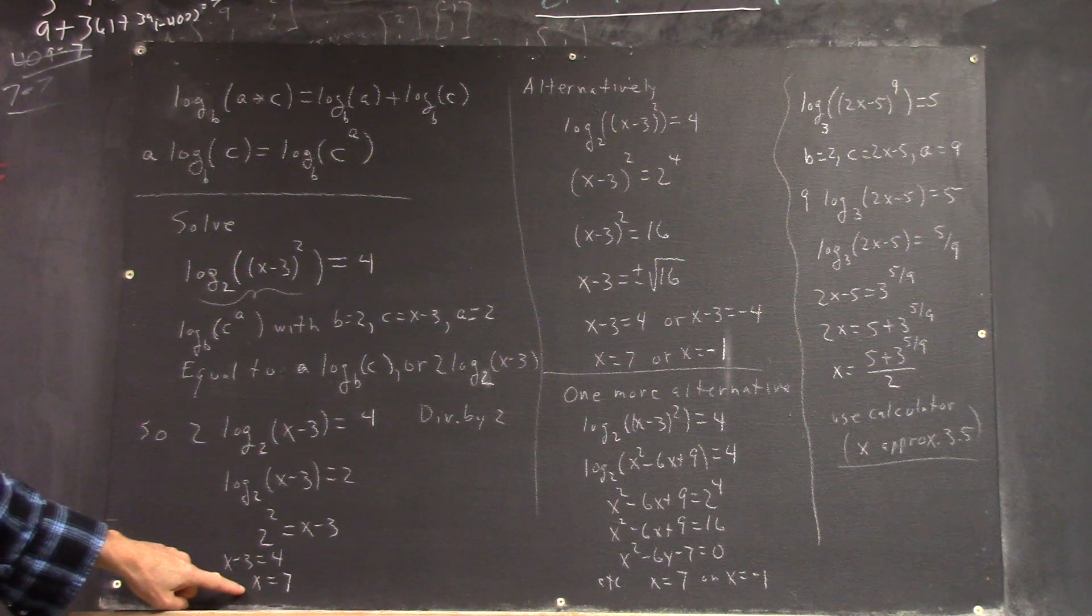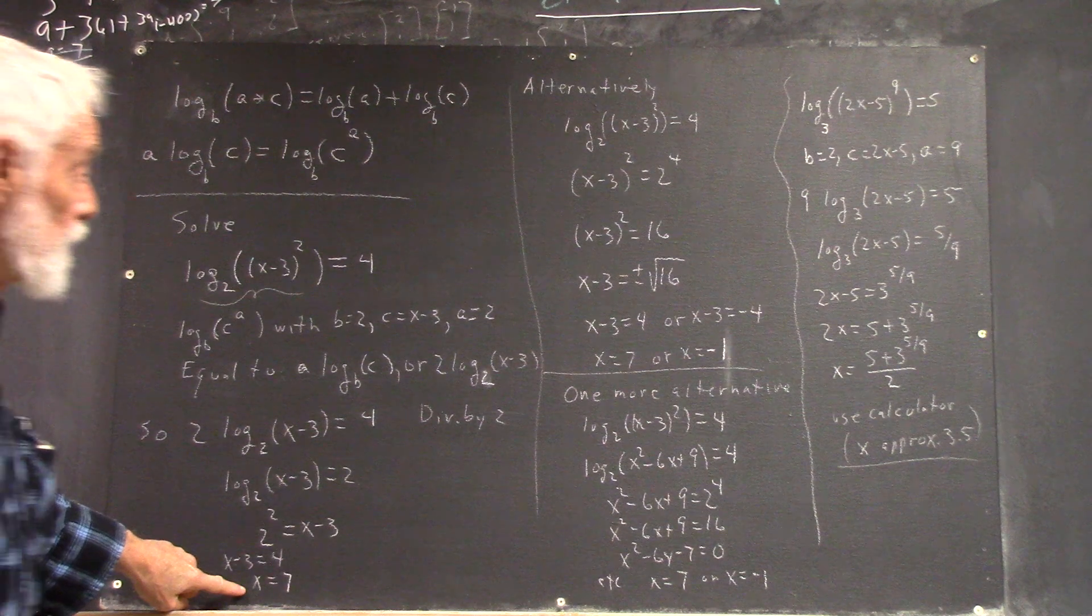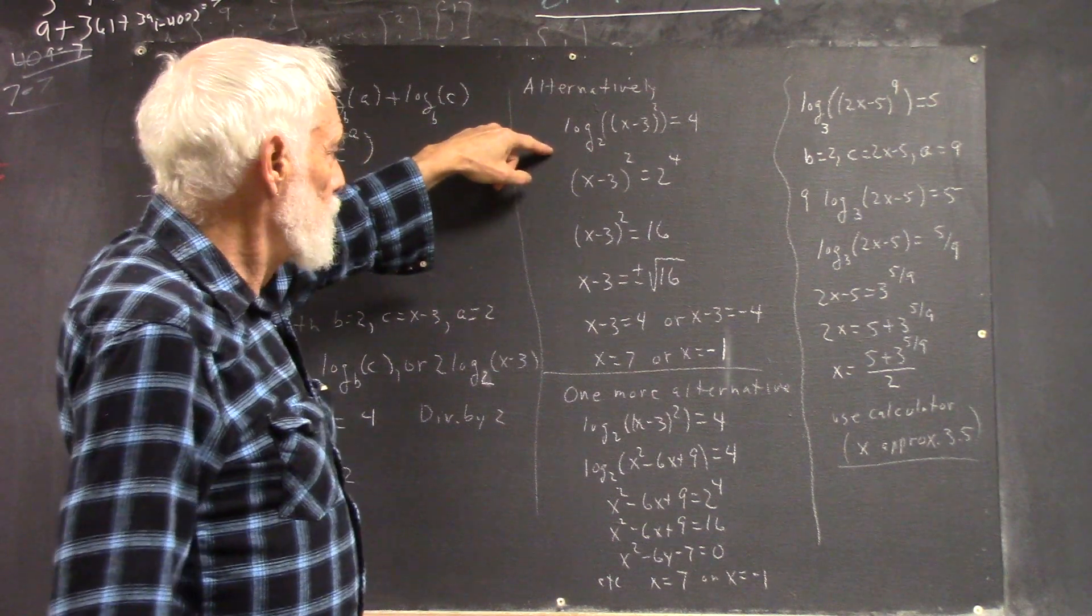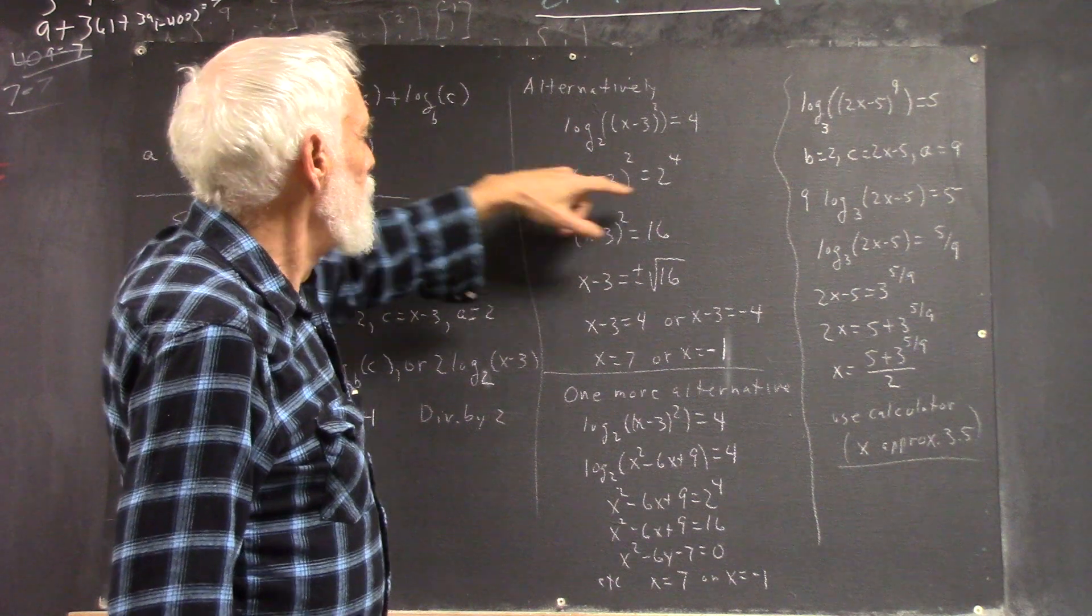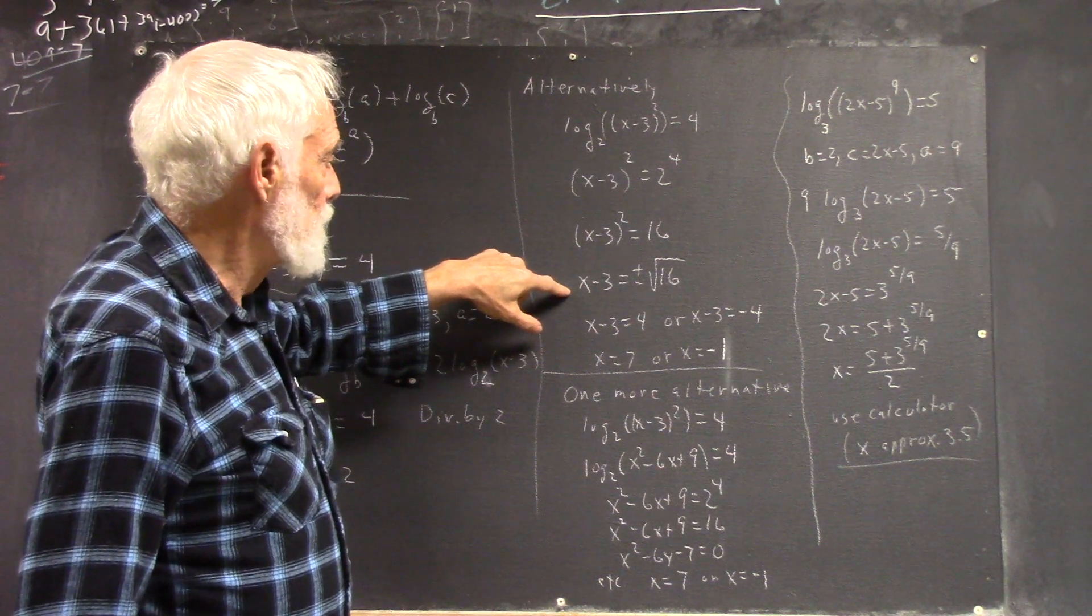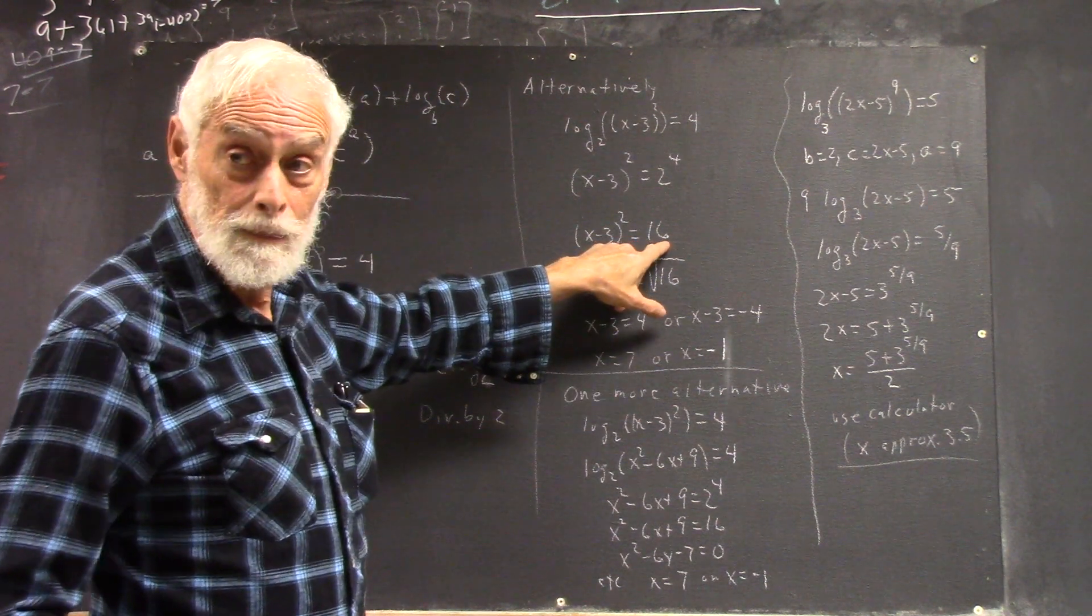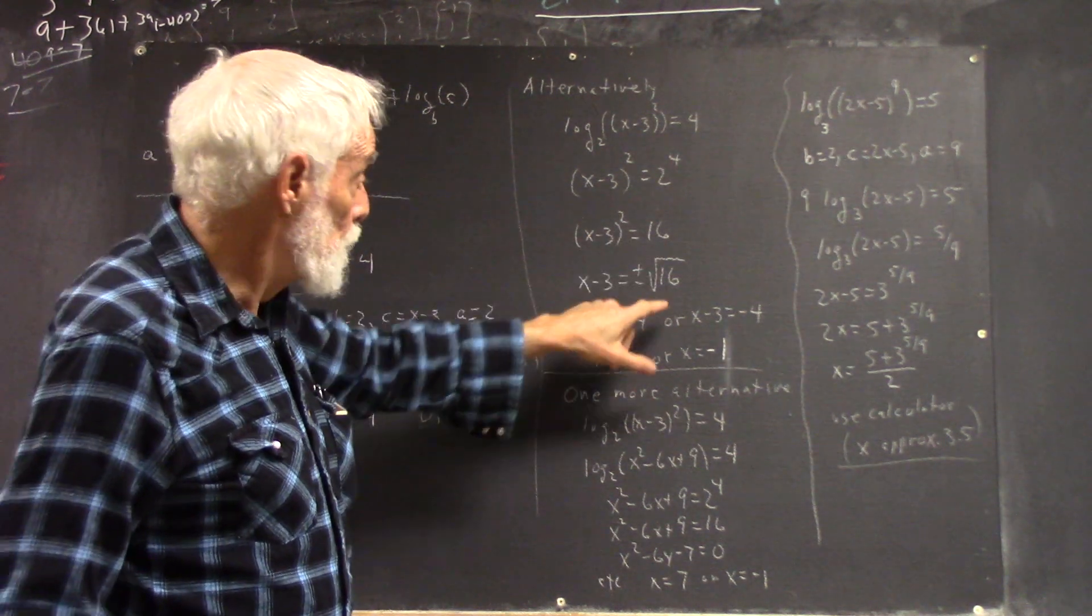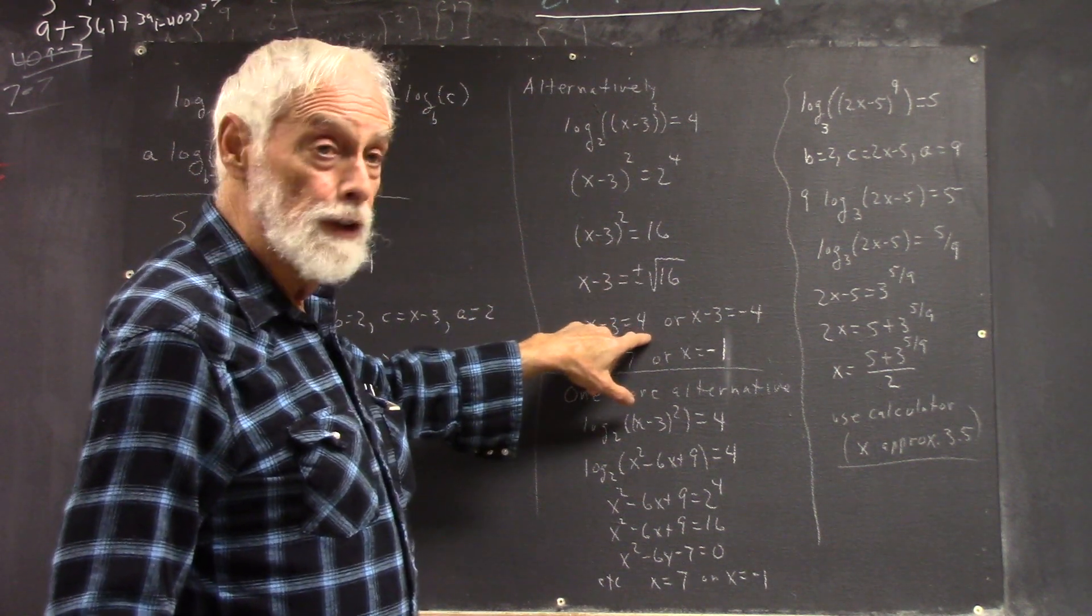Now this actually doesn't give you all the solutions. So you've got to be careful of extraneous solutions. If we did just what we're used to doing, this is going to be X minus 3 squared equals 2 raised to the fourth power. We get this equation, which has solutions. X minus 3 is plus or minus the square root of 16.